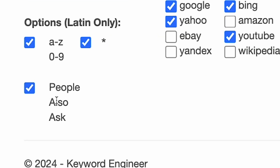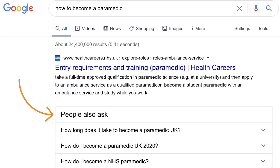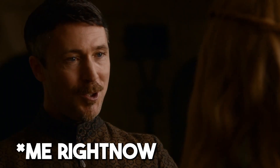The 'People Also Ask' option, as the name suggests, will extract keywords — not questions — from the People Also Ask section from Google. That is based on my knowledge; the developer of this tool didn't tell me directly. Knowledge is power.